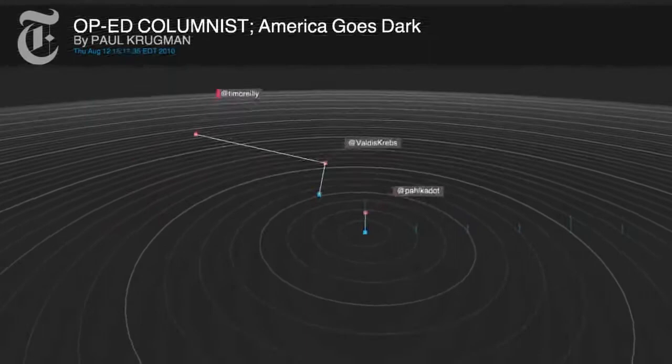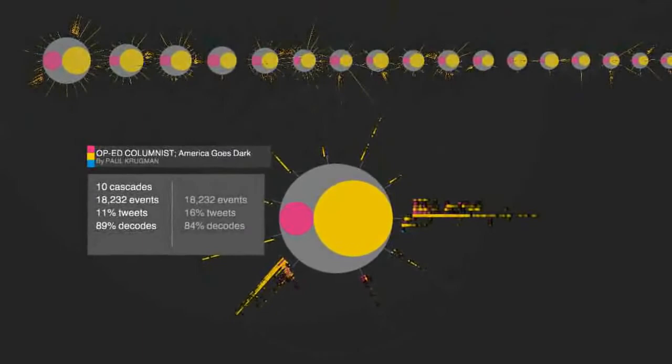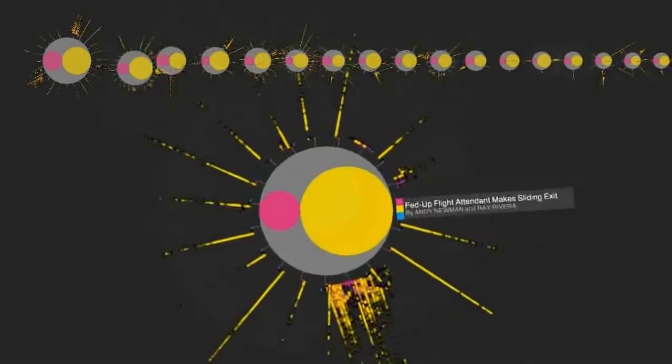One piece of content may have several different Cascade structures, since each Cascade is born from a single event. Stories with a lot of sharing activity can result in large, complex Cascades.